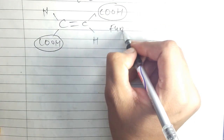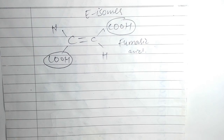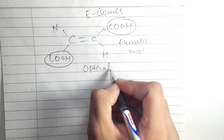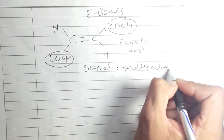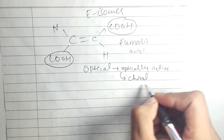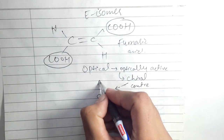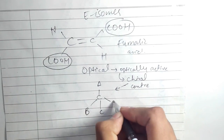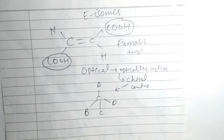Optical isomerism requires an optically active carbon that has a chiral center — a chiral carbon is one to which four different groups are attached. Compounds with a chiral center show optical isomerism: they have the same molecular formula, same structural formula, and same order of connectivity of atoms, but differ with respect to the 3D orientation of substituents in space.